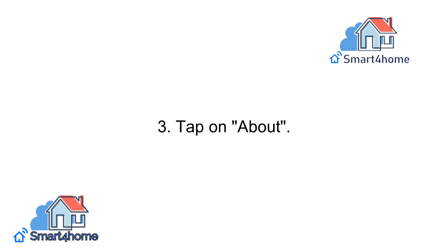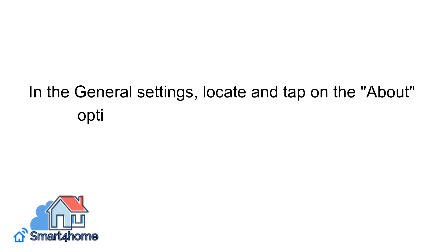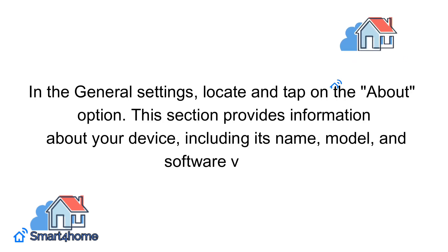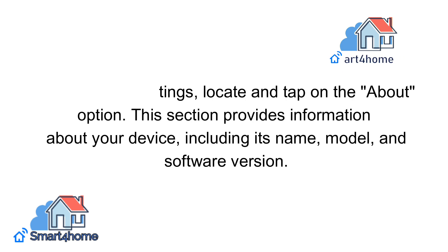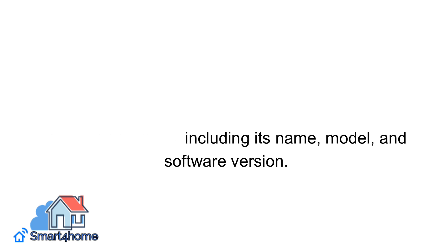Step 3: Tap on About. In the General Settings, locate and tap on the About option. This section provides information about your device, including its name, model, and software version.